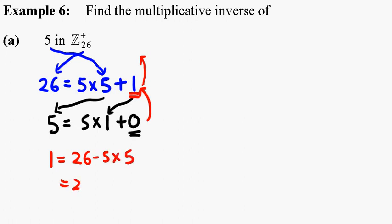In other words, 26 plus negative 5 times 5. So what do we have? If minus 5 is the multiplicative inverse of 5, and we know that minus 5 is congruent to 21 modulo 26.